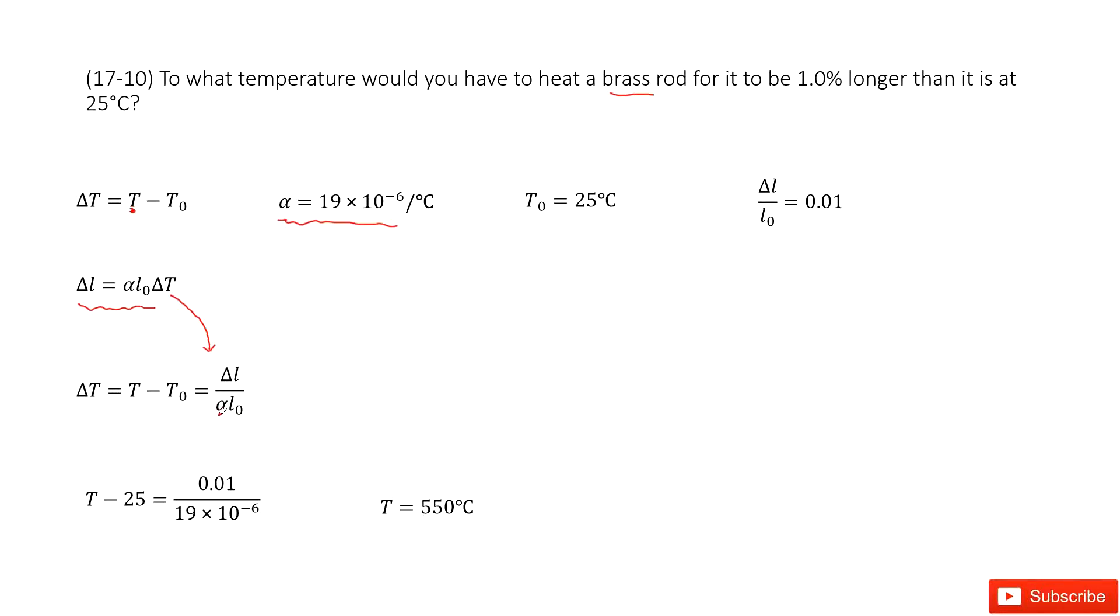Now we look at this function. We input known quantities. T0 is 25. Alpha is given. And delta L divided by L0 is this part. You just input it inside. You can say in this function, only the unknown quantity is T. You solve it and get the final answer.